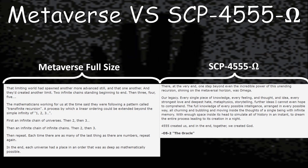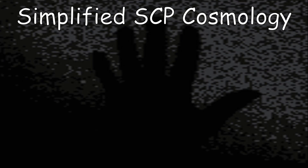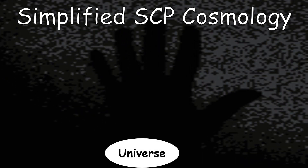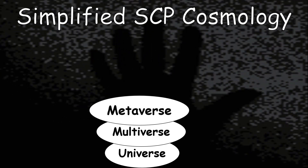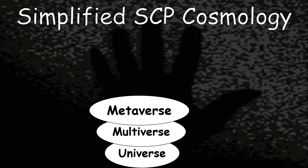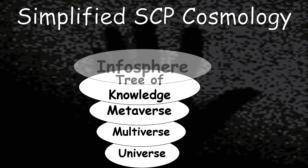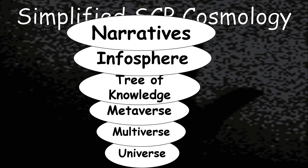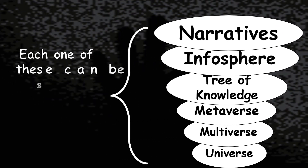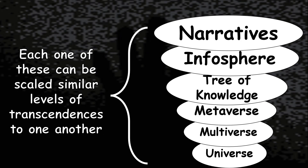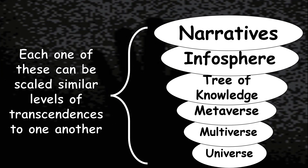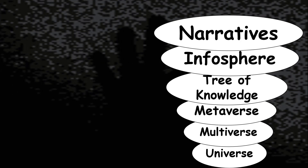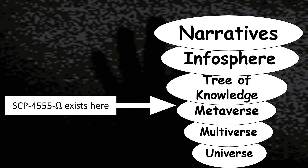Let's talk about how much higher the actual scaling is. Here's a simplified SCP cosmology — very simplified, so please do not take it 100% seriously. We start off with just a universe, then we go to the multiverse, then the metaverse we've just covered in this video. Then we start getting to the realm where gods exist — the higher conceptual ones such as the tree of knowledge. Higher than conceptual, we start getting to the infosphere, and higher than that is where we start getting to the narrative stacks in SCP. The gap between each one of these levels is relatively similar. The level of existence for SCP-4555 Omega would be between the metaverse and the tree of knowledge — likely at the very bottom of the tree of knowledge — as it's the peak of the metaverse and stated to be a god.